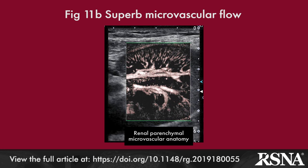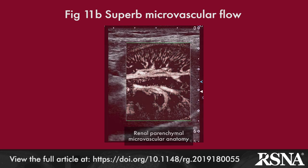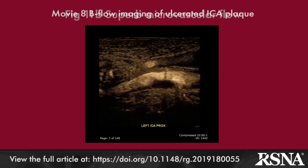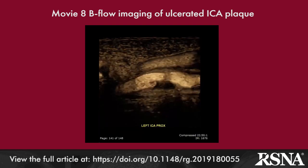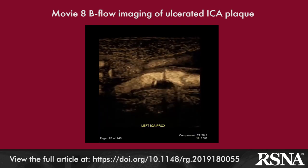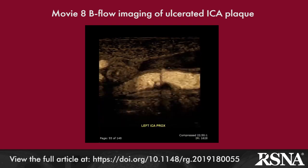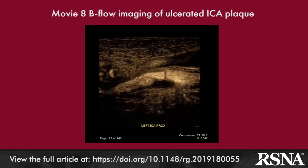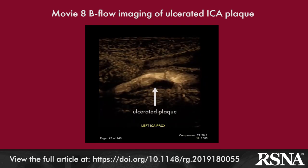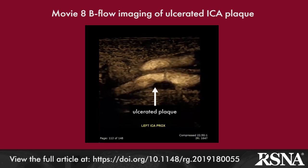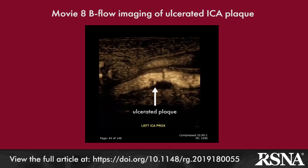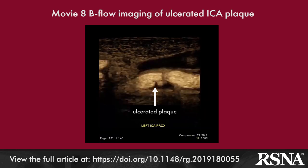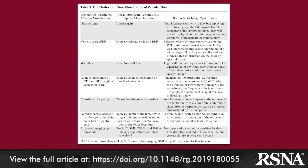Figures 11 and 12 and Movie 8 illustrate some of these techniques. B-flow imaging of the left internal carotid artery demonstrates intermediate blood flow within a small ulceration of the soft plaque. Dissection is also noted at the site of the internal carotid artery. This was not seen on color Doppler imaging due to blooming artifact and low sensitivity to slow flow.